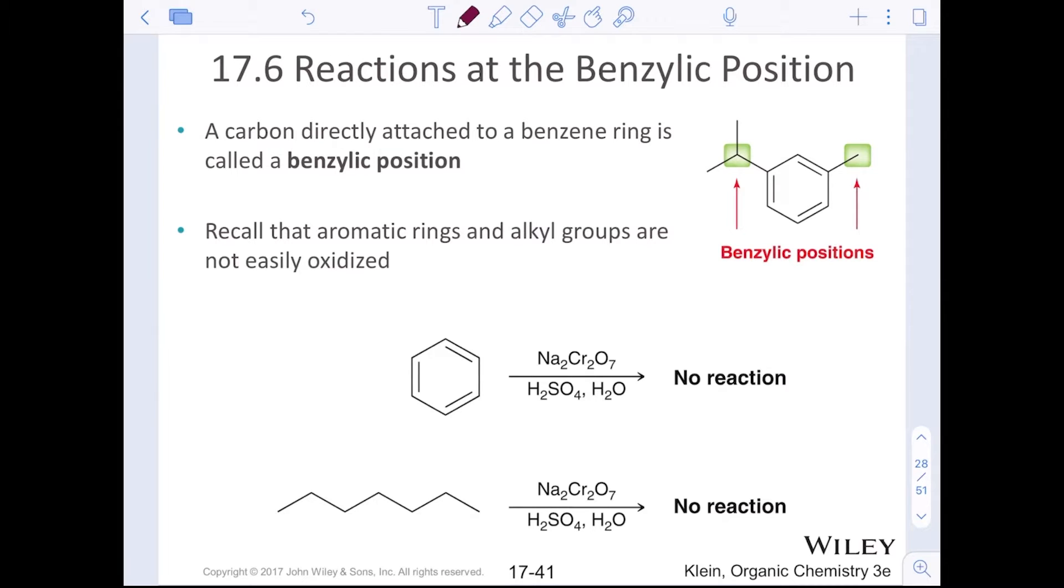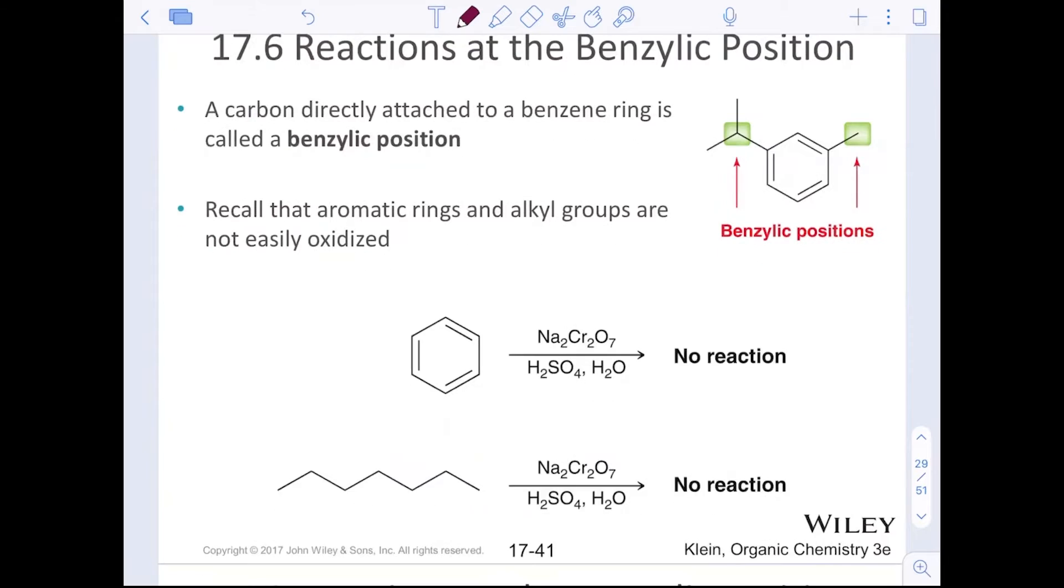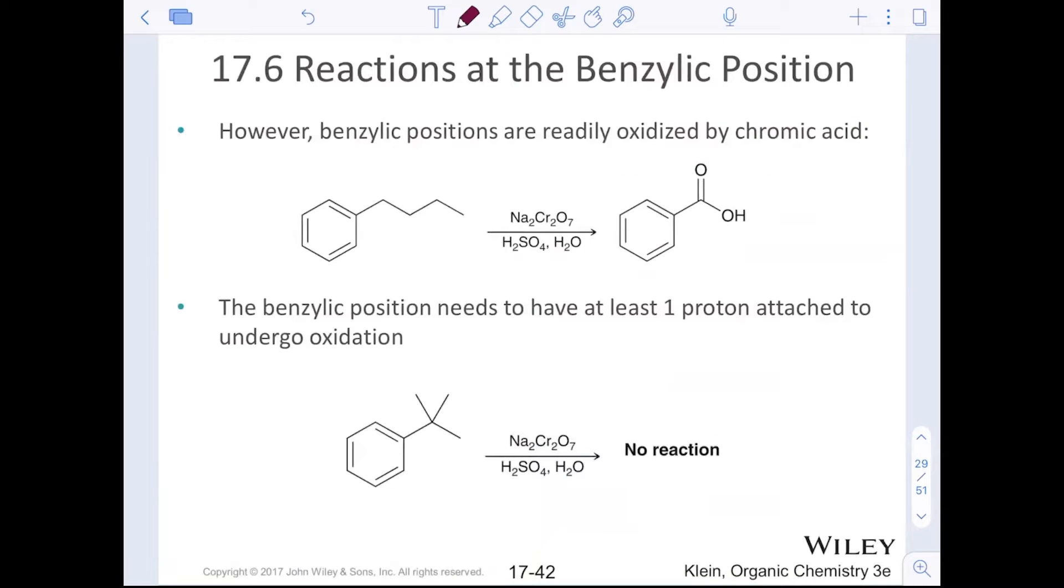Remember that aromatic rings and alkyl groups are not easily oxidized. Chromic acid oxidation is something that we did last year in the oxidation chapter, which was chapter 12 of our textbook, but chromic acid oxidation needed an oxygen already present typically on the molecule. What's interesting is that benzylic positions are readily oxidized by chromic acid. As long as you have at least one benzylic hydrogen, you will undergo oxidation, and that means we cut off the entire chain and we oxidize that benzylic position to a carboxylic acid.